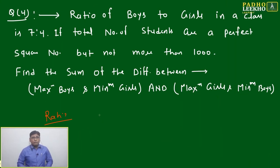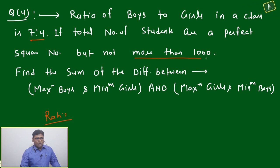But of course it requires something different way to think. Question is, ratio of boys to girls in a class is 7:4. It is given 7:4. If total number of students are a perfect square number but not more than 1000.